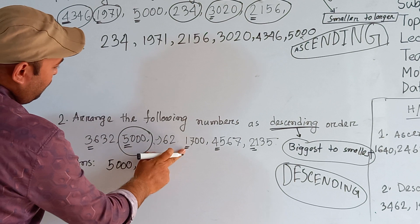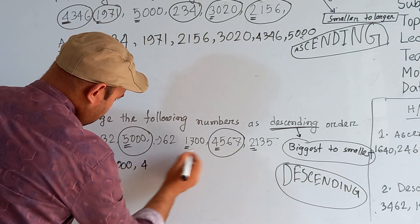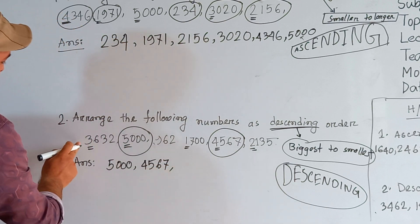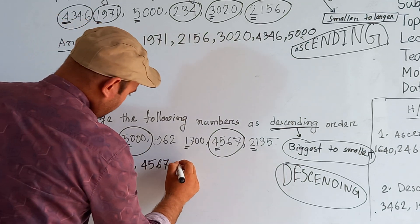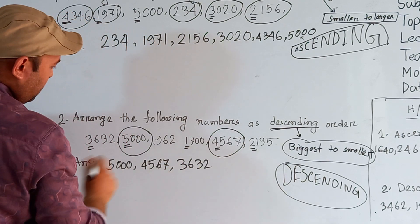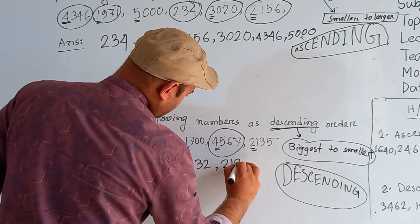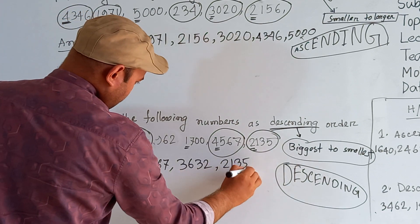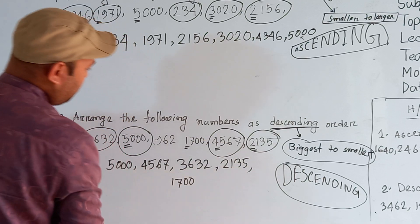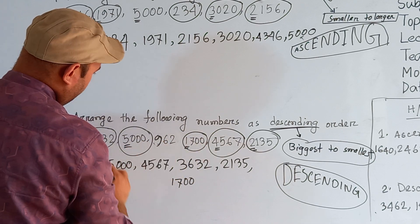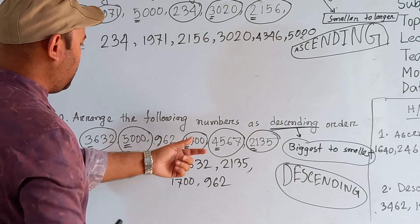From the remaining thousands — 3000, 1000, 2000, and 4000 — the biggest is 4000, so 4567 comes next. Then 3000 is the next biggest, so we write 3632. After that, comparing 2000 and 1000, we write 2135, then 1700. The last number is 962, the only three-digit number and the smallest. So the descending order is: 5962, 4567, 3632, 2135, 1700, 962.